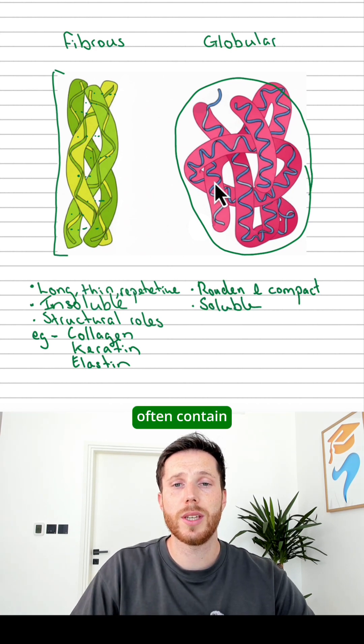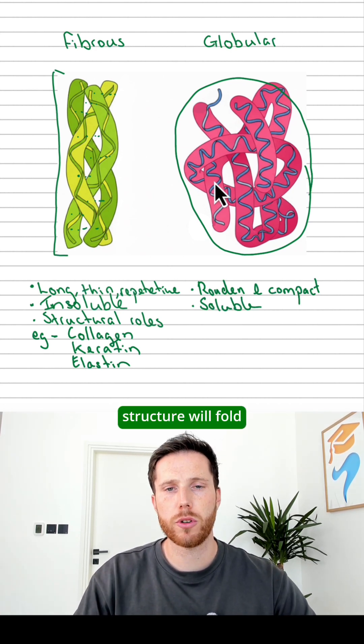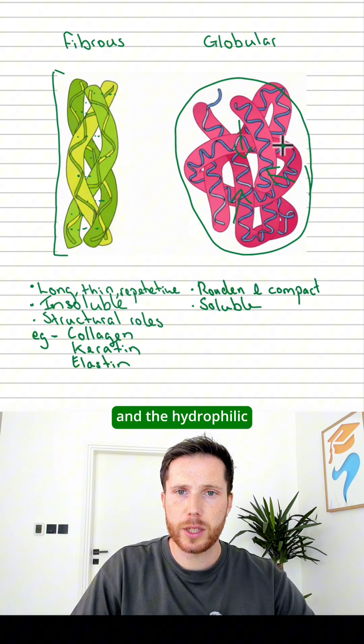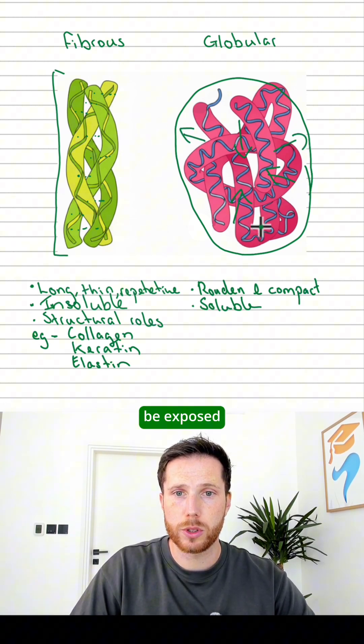Now they'll often contain both hydrophobic and hydrophilic groups. And their tertiary structure will fold in a way that the hydrophobic groups will tend to be pointing inwards, where they're protected, and the hydrophilic groups will be pointing outwards, where they can be exposed to water.